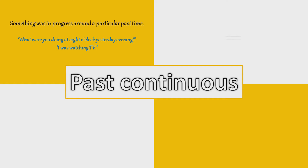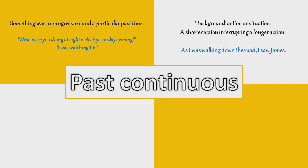The next rule: when you want to describe a background action or situation, or a shorter action interrupting a longer one. For example: as I was walking down the road, I saw James. Walking is the long action — you were on the street walking down the road — and suddenly another action interrupts it: when you saw James.